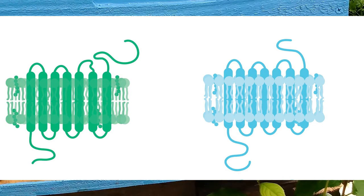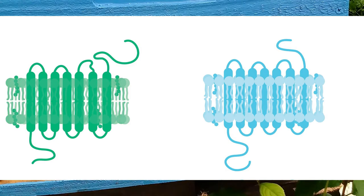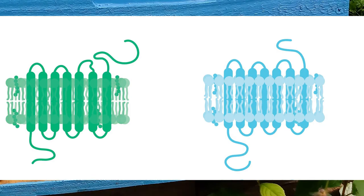TAAR, or trace amine associated receptors, are found in the olfactory epithelium and bulb — effectively your nose, or the other creature equivalent. Reptiles, amphibia like frogs, and a number of different mammals have a different version. This is also found in the olfactory bulb, but it's called the vomeronasal organ, sometimes also called Jacobson's organ depending on the age of your textbook.